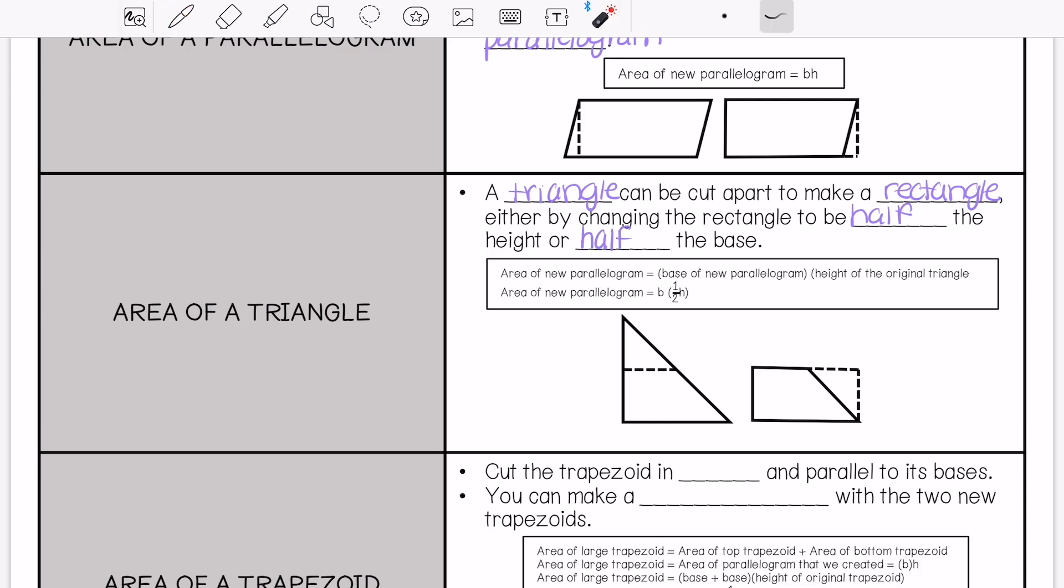When we cut this part out and add it to the side that was left over, it is now half the height of the original triangle. That is how we get the formula: base times height divided by 2, or one-half times base times height, or base times one-half height. It doesn't matter what order you multiply them in.